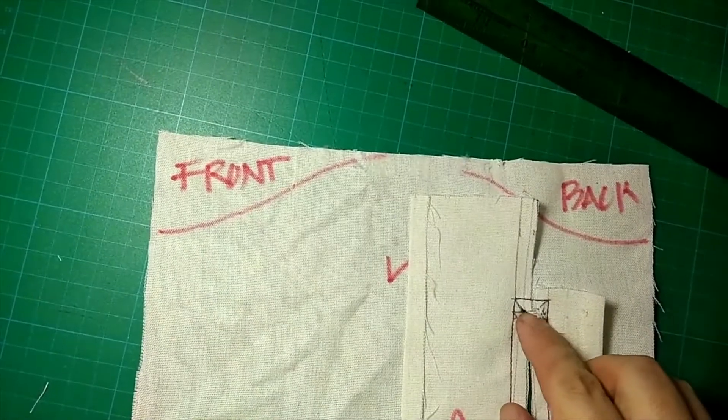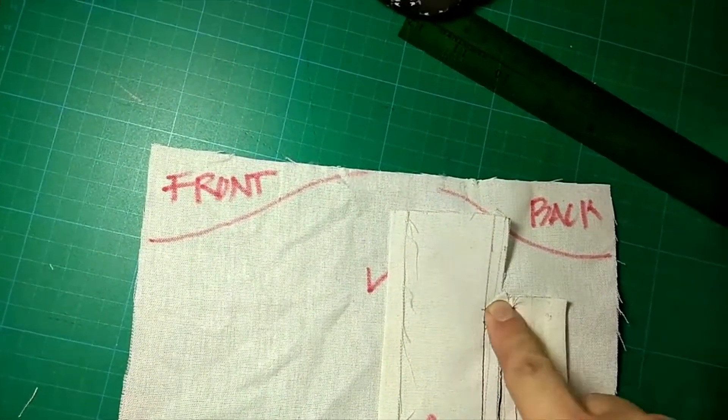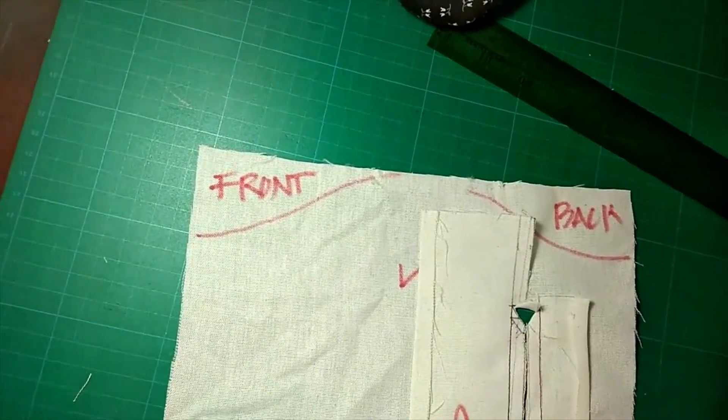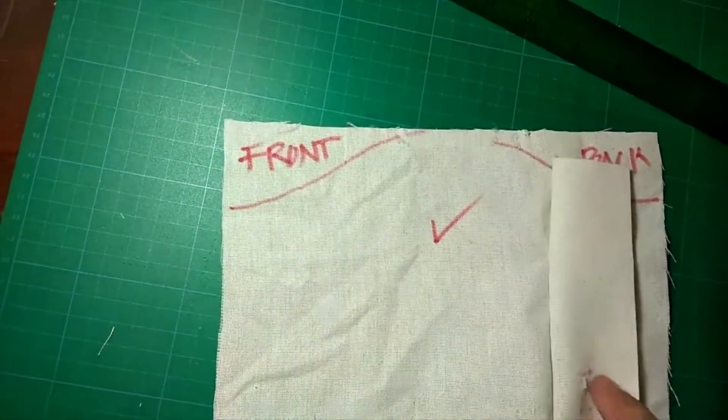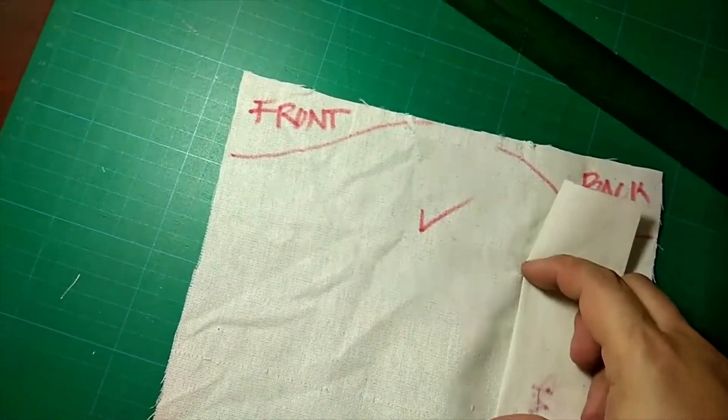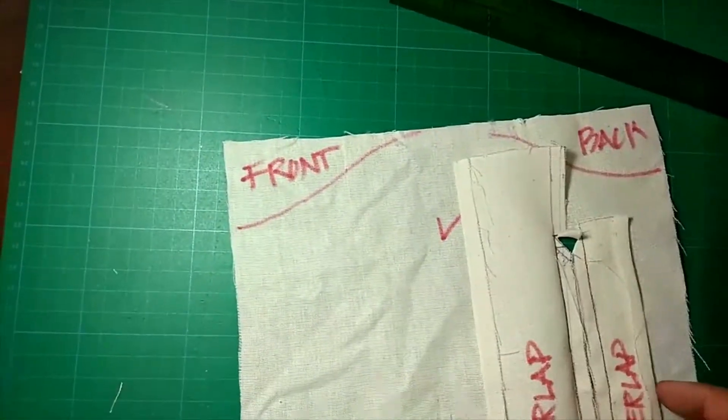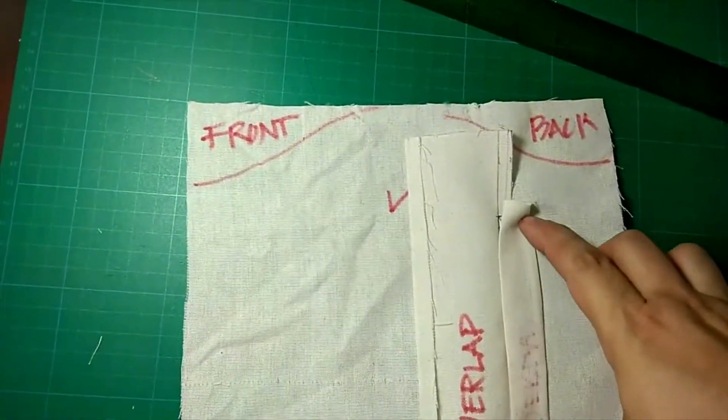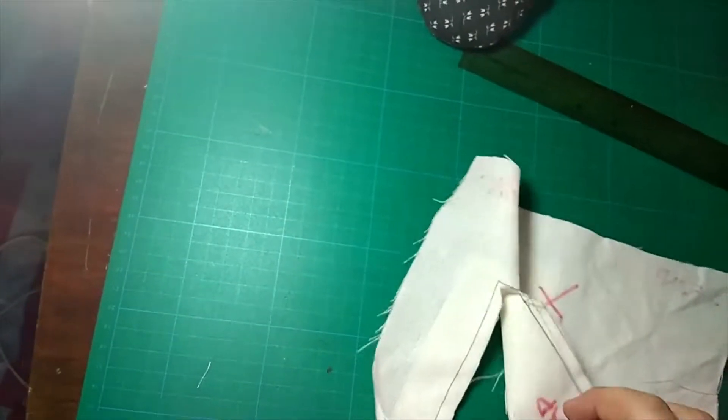Next, what you're going to do is flip up the triangle and then just try to finger press it so it will be flat. Now, we're going to turn everything under. Turn this around. Try to finger press this or use a hot steam press. Do the same thing for the other side. Press this using your fingernails. We're going to turn everything on the wrong side.